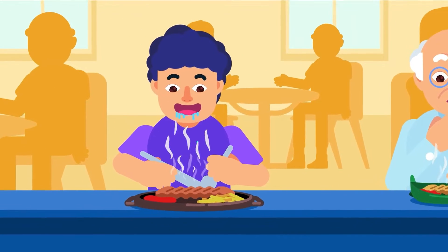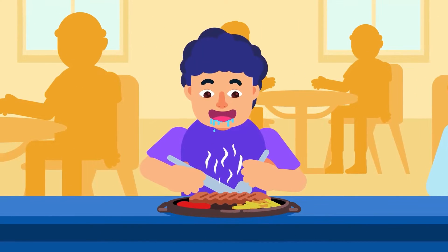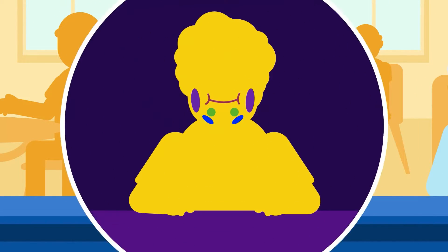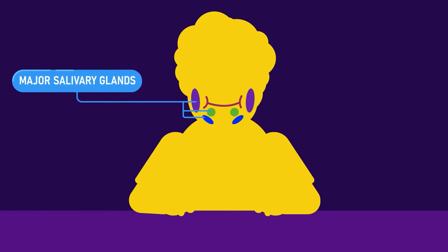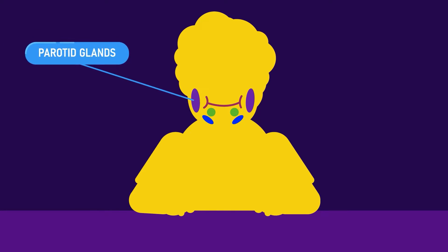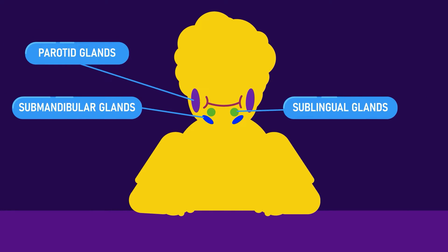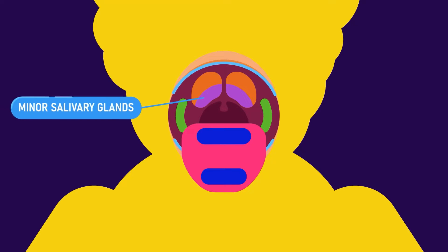It's all thanks to the precise work of your salivary glands in the oral cavity. Humans have three pairs of major salivary glands: namely the parotid, submandibular, and sublingual glands, along with up to a thousand minor salivary glands on the upper aerodigestive tract.